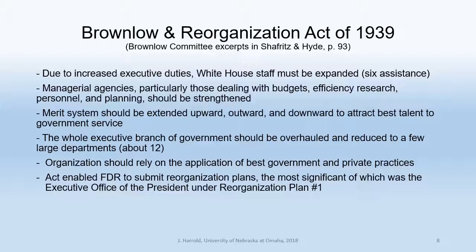The Brownlow Committee proposed several things: that the White House staff had to be expanded; that managerial agencies in the executive department — particularly those dealing with budget and personnel — should be strengthened; that the merit system, meaning the civil service system, should be extended in the executive office of the president so the best talent could work in government service; and that the entire executive branch should be overhauled and reduced to a few large departments.